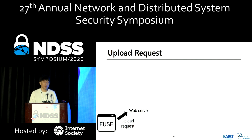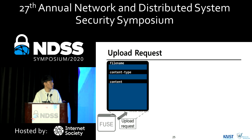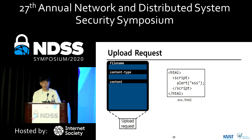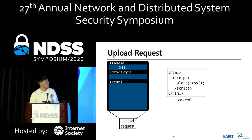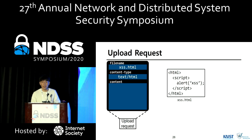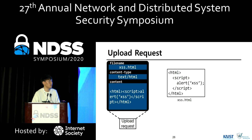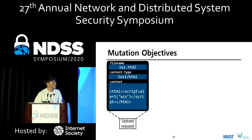Before introducing how we mutate, let's see what structure an upload request has. From the point of view of the file, each element is represented as follows. First, file name is the file name itself, content type is the MIME type of the file, and finally, content is the binary content or plain text of the file. Now we introduce our mutation operations with their objectives.